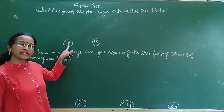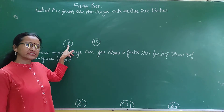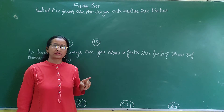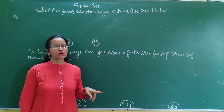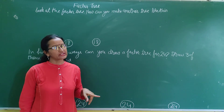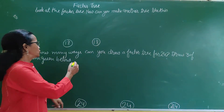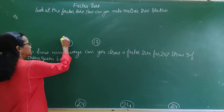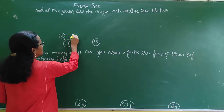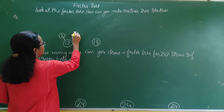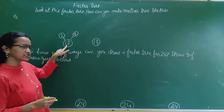Now here is 18. Now break 18. In which table does 18 come? 2 nines are 18. So right here we write 2 and 9. 2 nines are 18.